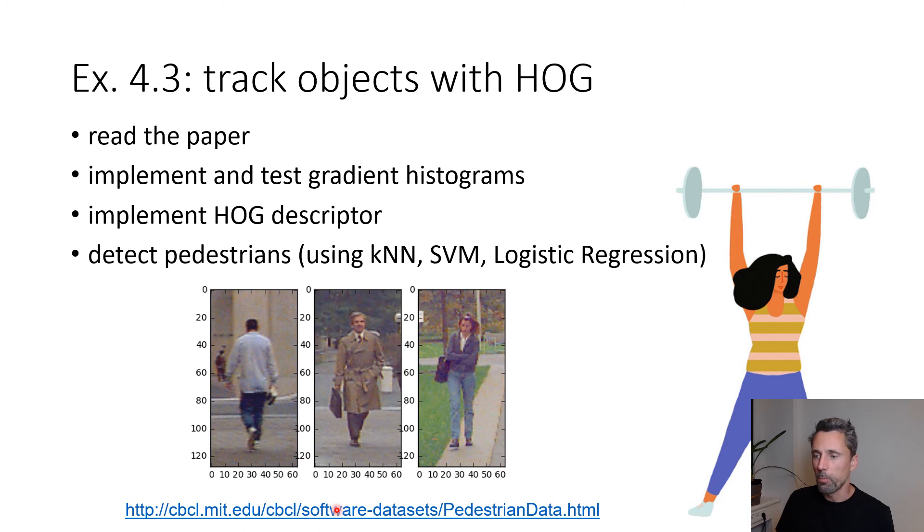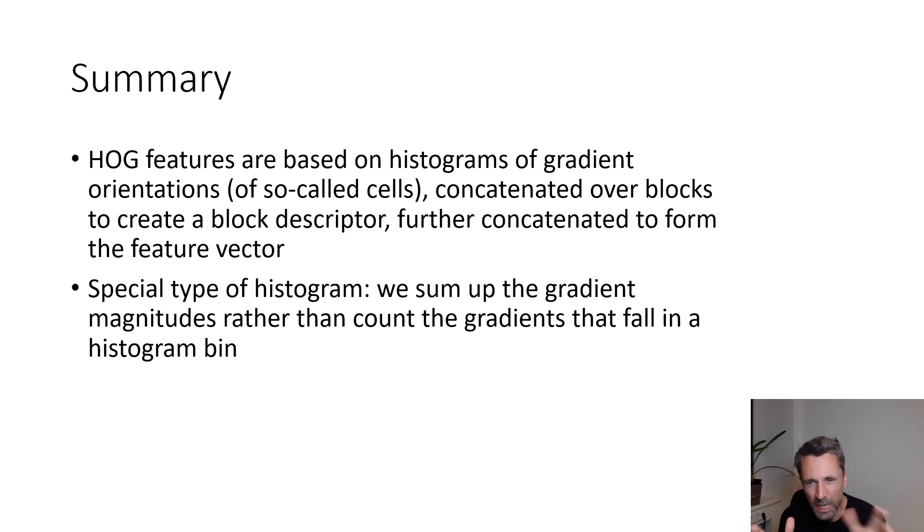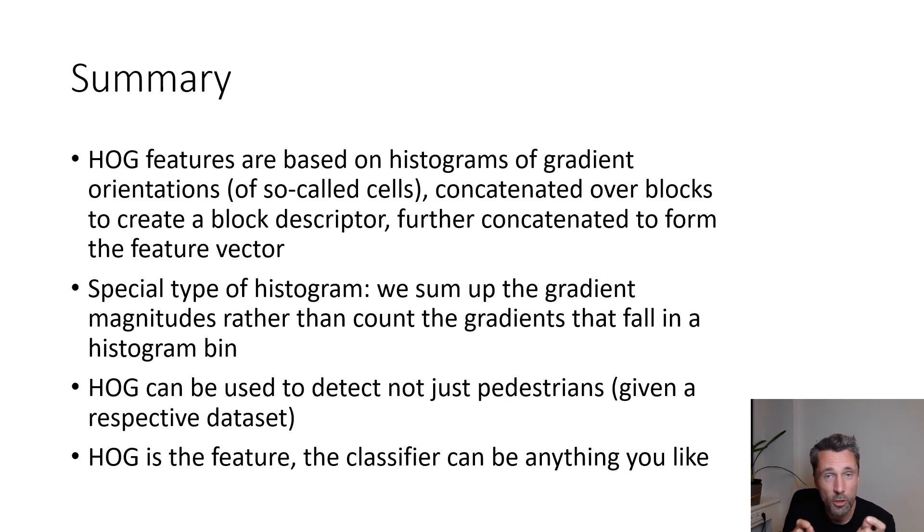Let's sum up. HOG features are based on histograms of gradient orientations, and we collect all those orientations within so-called cells - eight by eight pixel cells. These histograms are then concatenated over so-called blocks to create a block descriptor, and these block descriptors are then further concatenated to form a feature vector within one fixed-size region of interest. It's a special type of histogram - it's not the count of gradient directions, but rather the sum of the gradient magnitudes. HOG can be used to detect pretty much everything that has gradients, you just need a respective dataset. HOG is the feature; the classifier can be anything you like.